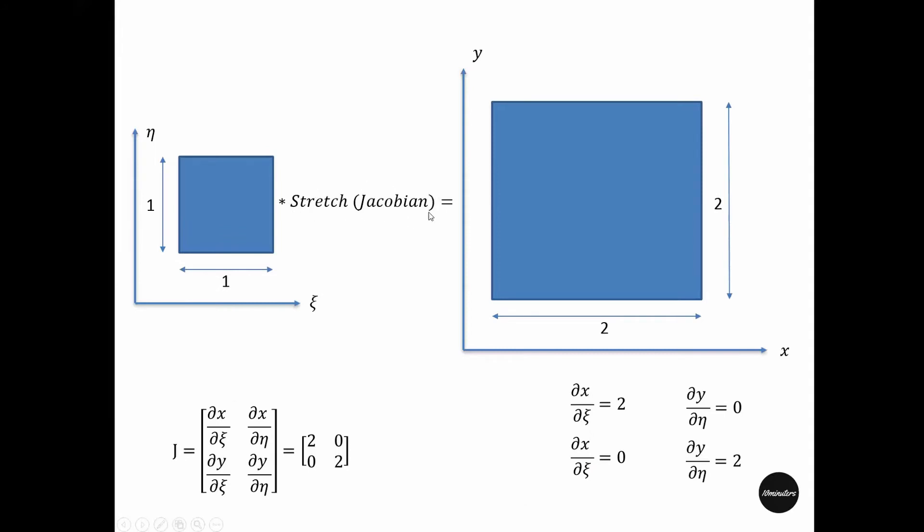Let's now see how we can construct this stretch Jacobian. To find the transformation from zeta-eta to x-y, we have to find the derivative of x and y with respect to zeta and eta. So the Jacobian is derivative of x with respect to zeta, derivative of x with respect to eta, and also derivative of y with respect to zeta and derivative of y with respect to eta.